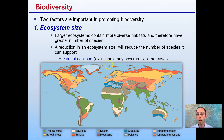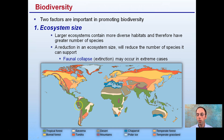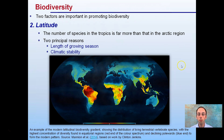In extreme cases, this is called faunal collapse — if an ecosystem becomes too small to support a large number of species, it can collapse. Some major ecosystem examples include desert regions, tropical rainforest, polar ice caps, temperate forests, and temperate grasslands — these are just some examples of ecosystems.